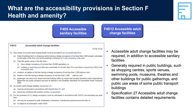The NCC requires accessible adult change facilities to be provided in some Class 6 shopping centres and some Class 9B buildings, depending on their purpose, floor space area and design occupancy levels. This requirement is primarily targeted at large public buildings, including shopping centres, sports stadiums, aquatic centres, museums, art galleries and airports. Part F4D12, in conjunction with Specification 27, sets out the particular requirements and specifications for accessible adult change facilities.